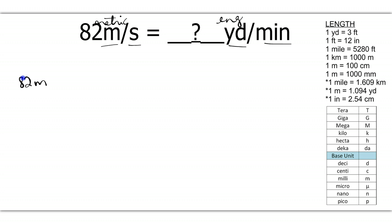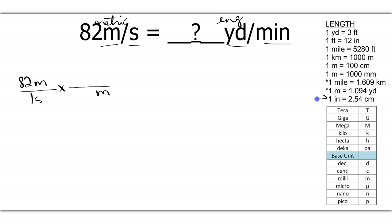We're going to write 82 meters all over one second, because 82 meters per second is 82 meters per every one second. Times, draw a line. Now you're dealing with two different units. We're going to do one at a time, starting with meters since that's our length. We're going to bring down meters and change from meters to yards, so we'll use one of our English-to-metric conversion factors. Fortunately, we have a conversion factor directly from meters to yards: one meter is equal to 1.094 yards.